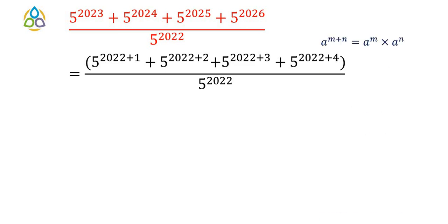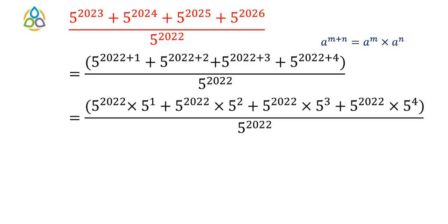Using the formula a to the power m plus n equals a to the power m into a to the power n, where a equals 5 and m equals 2022, and n equals 1, 2, 3, or 4 depending on the term, the expression becomes: 5 to the power 2022 into 5 to the power 1, plus 5 to the power 2022 into 5 square, plus 5 to the power 2022 into 5 cube, plus 5 to the power 2022 into 5 to the power 4, whole divided by 5 to the power 2022.